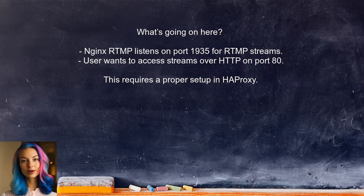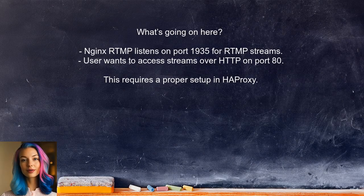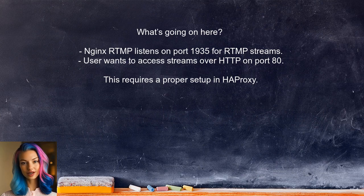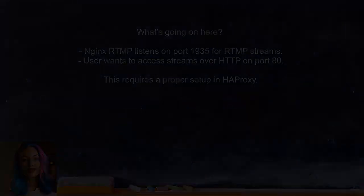The user has configured NGINX RTMP to listen on port 1935 for RTMP streams, but they want to access these streams over HTTP on port 80. This requires a proper setup in HAProxy to forward the requests correctly. Let's explore how to make this work.